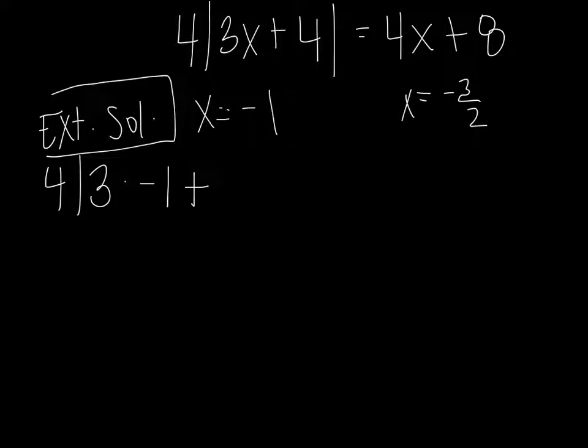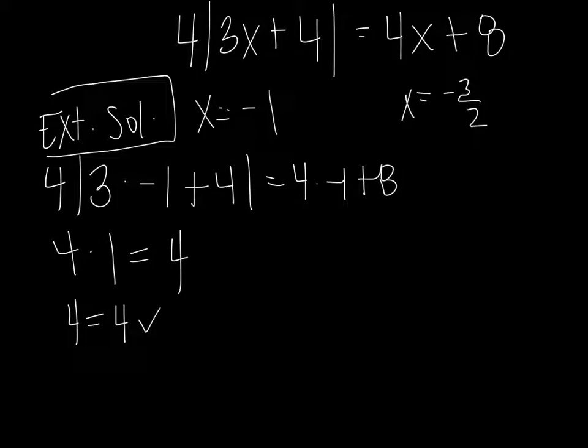3 times negative 1 plus 4 equals 4 times negative 1 plus 8. Simplify that. So 3 times negative 1 plus 4 is negative 3 plus 4 is 1. So I have 4 times the absolute value of 1 is just 1. And then negative 4 plus 8 is 4. And yes, 4 does equal 4. Remember, that's not your solution. Your solution's up here, x equals negative 1. So we know that's a real solution. That is not extraneous.